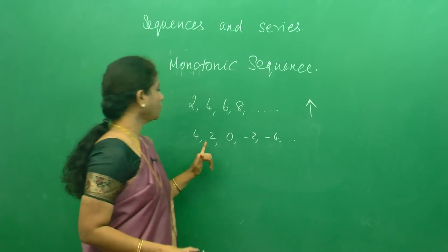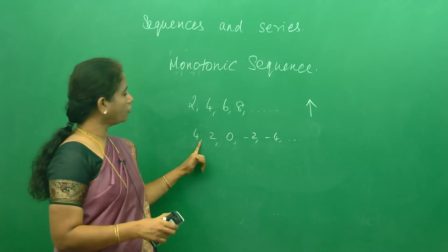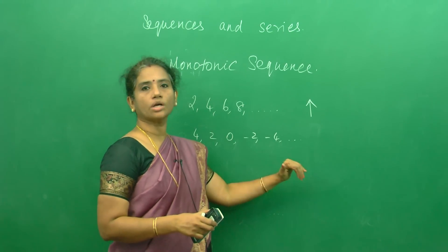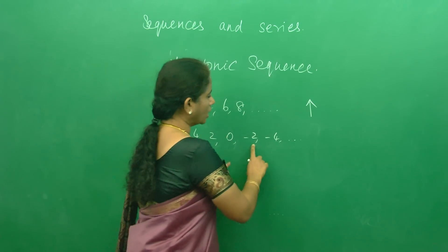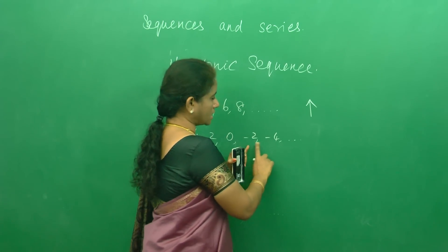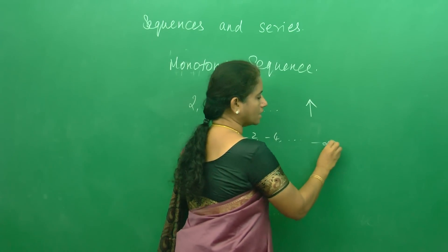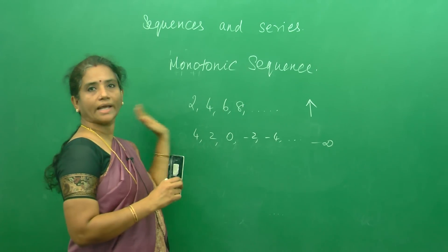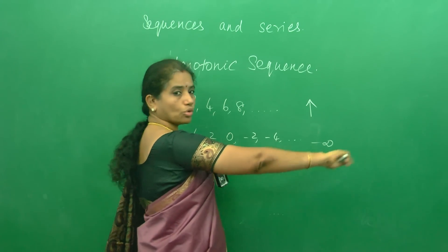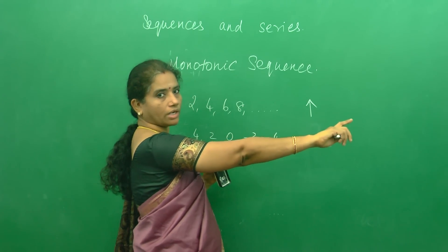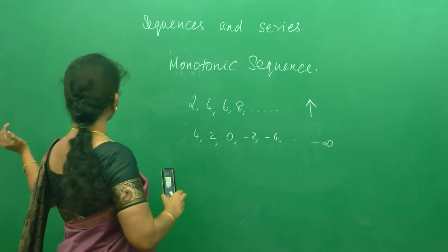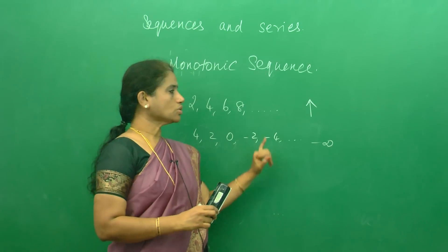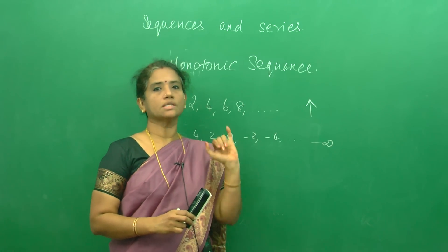If you look at this sequence — 4, 2, 0, -2, -4, etc. — the terms go on decreasing, but you understand this goes on up to minus infinity. So this is again diverging because it goes to negative infinity. Whether a sequence goes to positive infinity or negative infinity, we call it divergent. So these two sequences are diverging sequences.